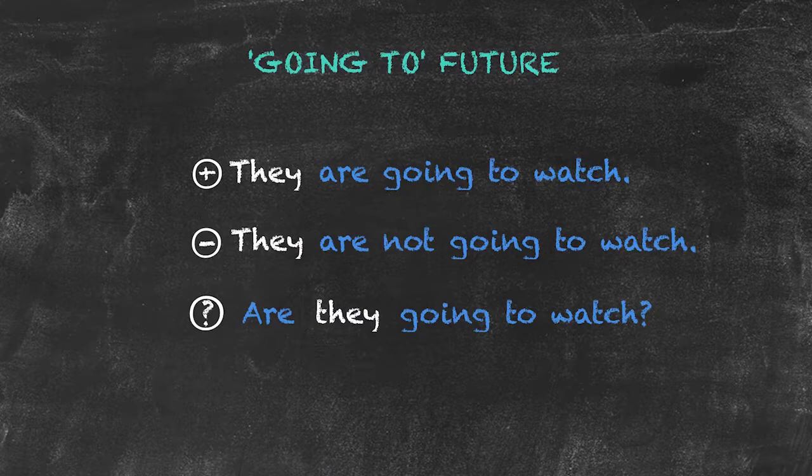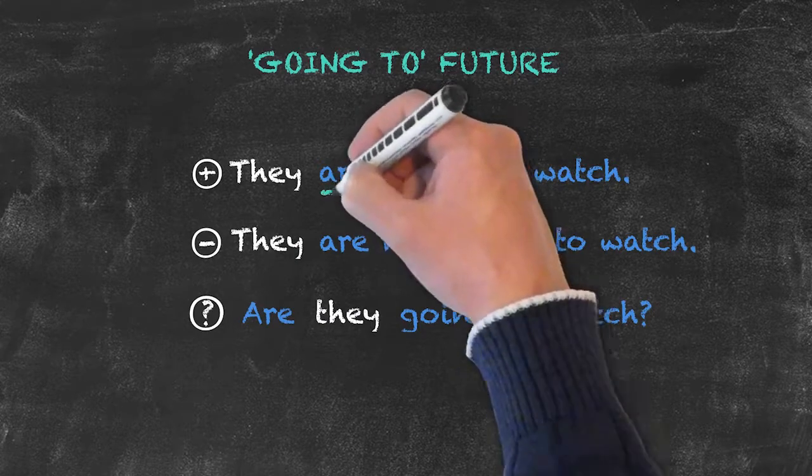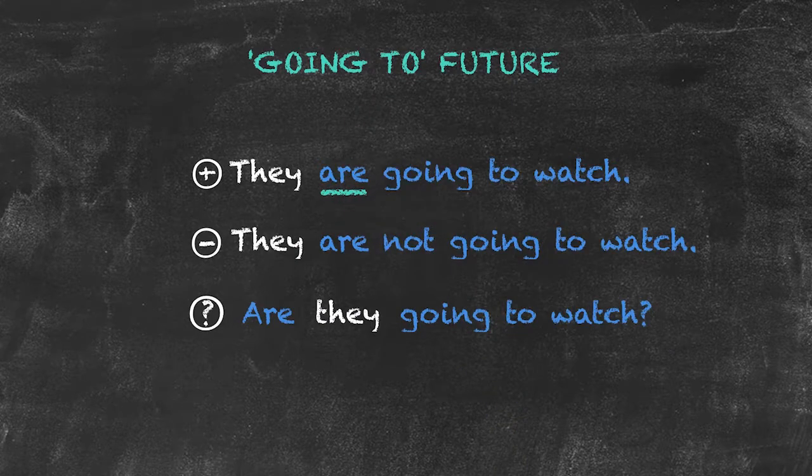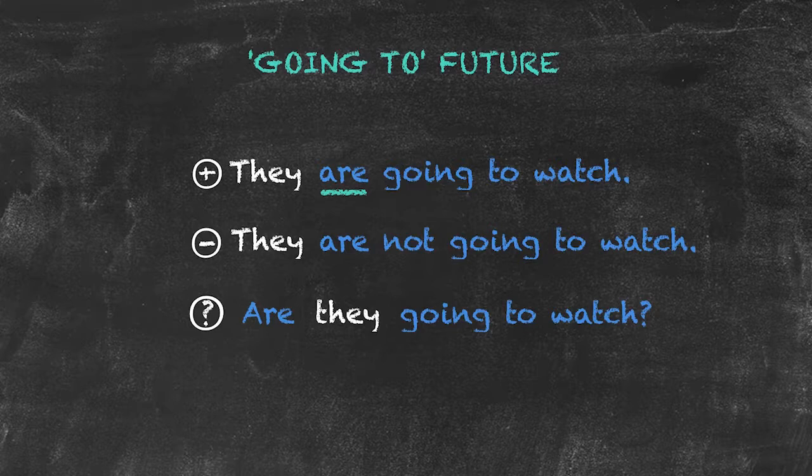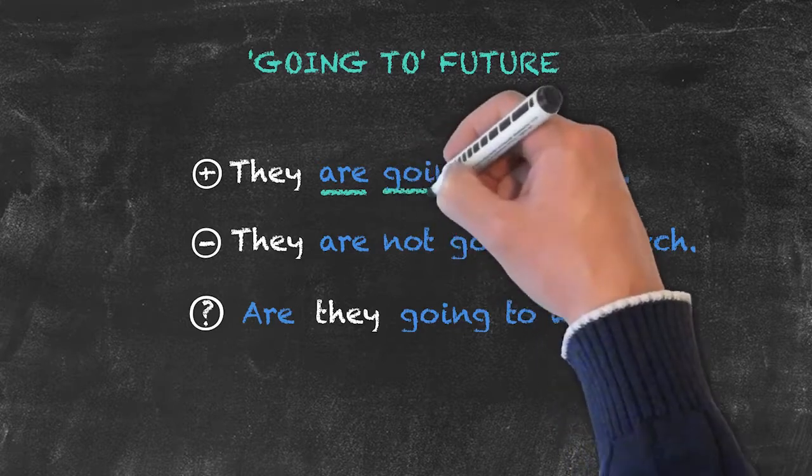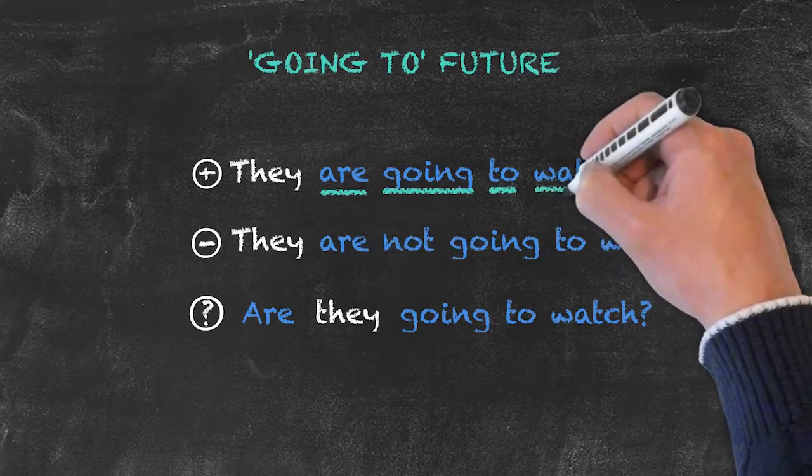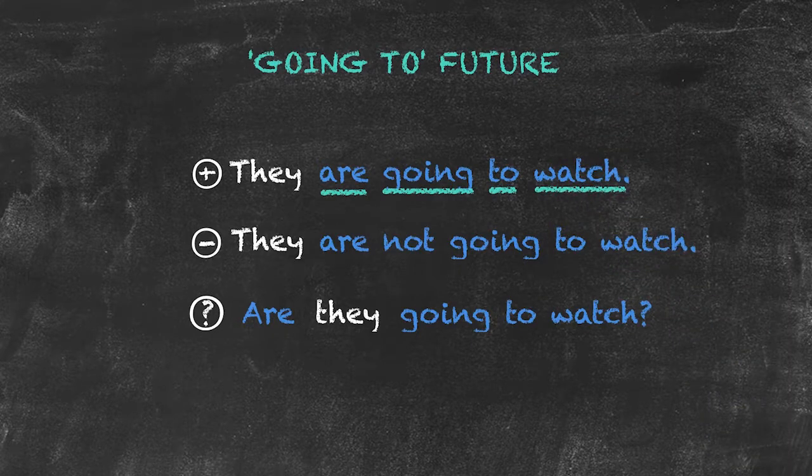Here, the important words are the helping verb to be, conjugated appropriately based upon our subject. We've got the word going, the word to, and the base form of any verb that follows.